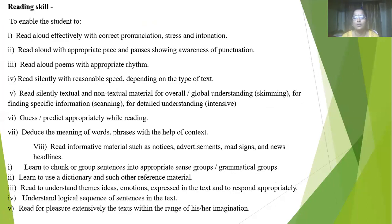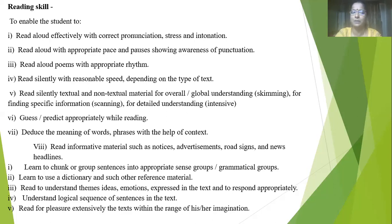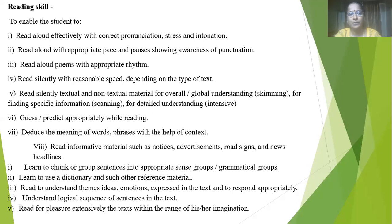Coming to reading skills — the objective of teaching English as a first or second language is to develop reading skills. Students should be enabled to read aloud effectively with correct pronunciation, stress, and intonation. There are different types of reading: loud reading, silent reading, loud recitation, silent recitation, individual reading, and chorus reading. In English as a second language, chorus reading and row reading are used where students read group-wise or row-wise.